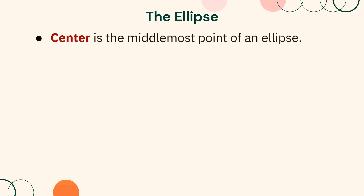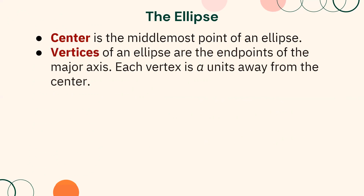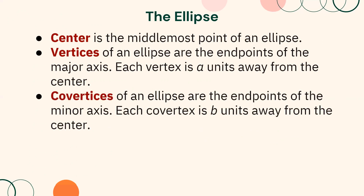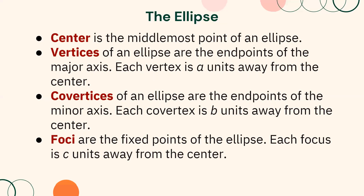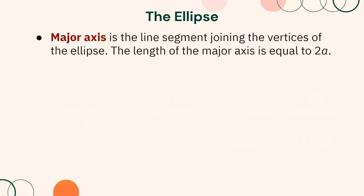We have also determined the elements of the ellipse as the following. The center is the middlemost point of an ellipse. Vertices are the endpoints of the major axis; each vertex is a units away from the center. Covertices are the endpoints of the minor axis; each covertex is b units away from the center. Foci are the fixed points of the ellipse; each focus is c units away from the center. The major axis is the line segment joining the vertices, with length equal to 2a.